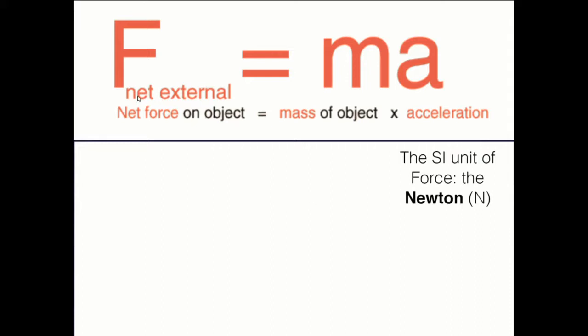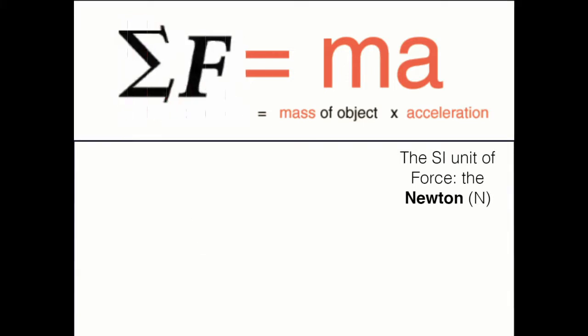Now often, sometimes we don't like to say F net external, meaning external net forces. Internal forces are completely ignored here. We sometimes use this instead, sum of F. Now sum of F makes a lot of sense because we have multiple forces acting on an object. These are all vectors, and they all add to give one net vector. So F net.